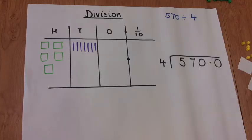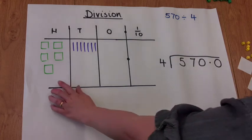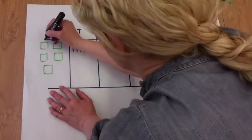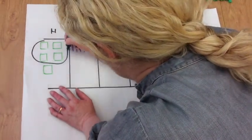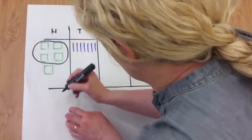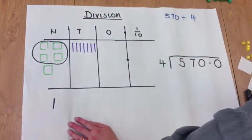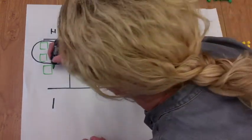Here we have the pictorial and abstract representation of bus stop division. So we're going to divide 570 by 4. In the hundreds column we've got one group of 4. And then there's 100 left over.